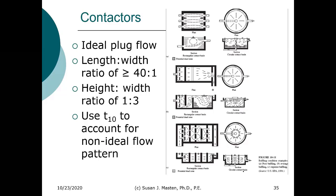With contactors, we want an ideal plug flow and a length-to-width ratio greater than 40 to 1 to help ensure plug flow, especially with our chlorine contactors. Typically a height-to-width ratio of 1 to 3. We'll use the concept of T10 to account for non-ideal flow.